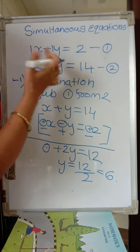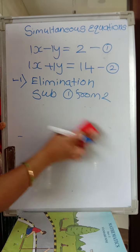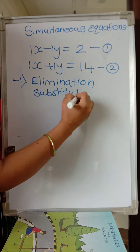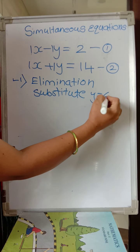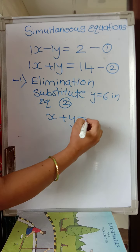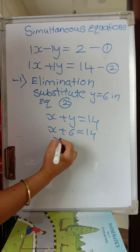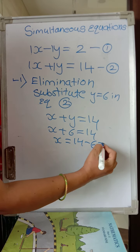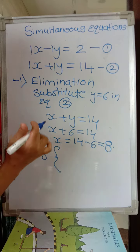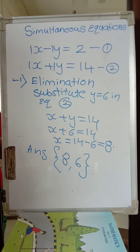We got y equals 6 by subtraction also. Now substitute y equals 6 in equation 2: x plus y equals 14 becomes x plus 6 equals 14, so x equals 14 minus 6, which equals 8. Again, the answer is 8 comma 6. So when we did addition, we eliminated y; when we did subtraction, we eliminated x.